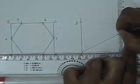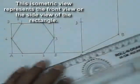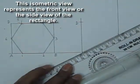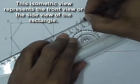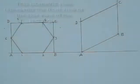Now parallel to AD we will draw BC, side BC. So this type of isometric view will represent either the front view or the side view.